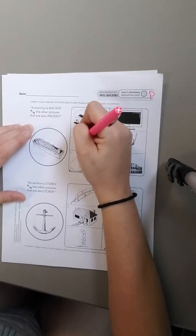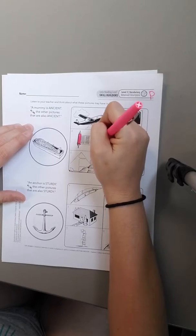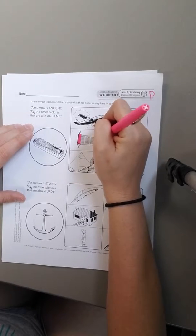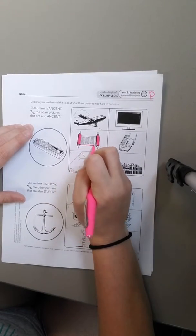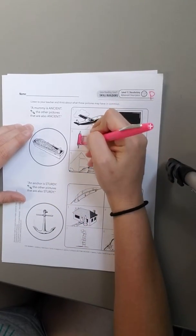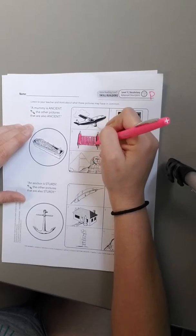Because I know that we don't write on things like this anymore. We write on paper, right? So, and we type on paper. We don't even really write too much anymore. So I know that this is very, very old, just like a mummy is very old. So I'm going to color this in.